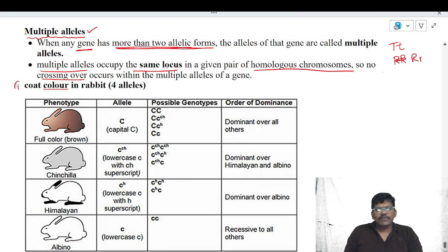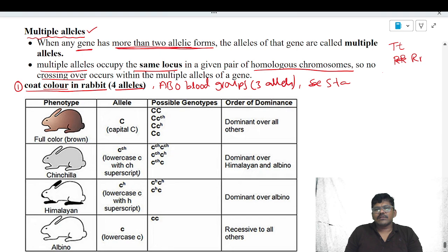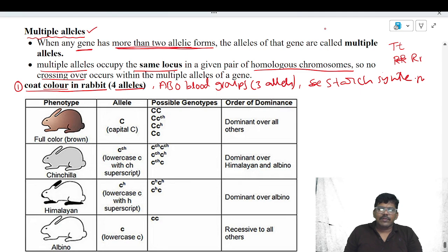There are different examples for multiple alleles. The first one is coat color in rabbit, in which you can see four alleles. The second one is ABO blood groups, which are also formed because of multiple allelism — there you can see three alleles for a single gene. Apart from that, we can also see starch synthesis in pea plant as an example for multiple alleles. We will see each example separately, starting with coat color in rabbit.